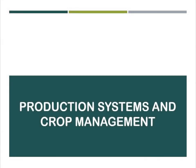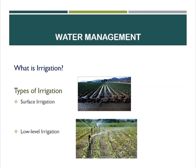We will discuss water management. In crop biology or in plant biology, we have discussed the importance of water. And that's why we should irrigate, especially on the times there is no water. What is irrigation? Irrigation is the application of water to the land or soil, especially in agriculture, during periods of inadequate rainfall.